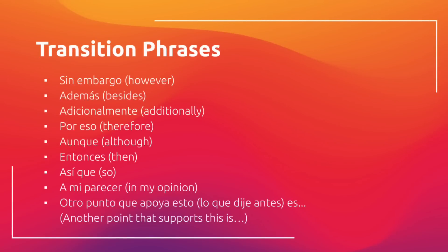Some transition words that I like to use include sin embargo, además, adicionalmente, por eso, aunque, entonces, así que, and a mi parecer. You could also say something general like 'otro punto que apoya esto, lo que dije antes' — another point that supports what I was talking about earlier. The transitions you could use are not limited to these phrases, but these are ones I often include in my writing.